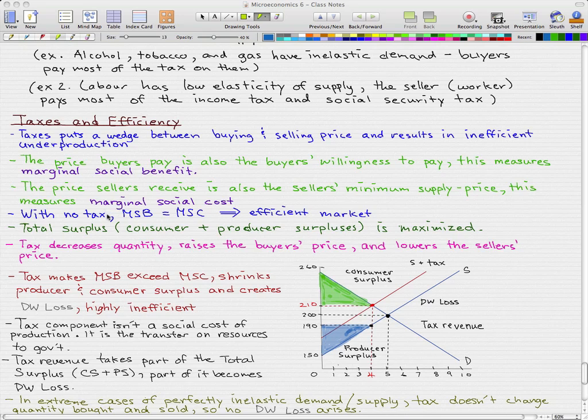We know that with no tax, the marginal social benefit equals the marginal social cost, and that results in an efficient market. The total surplus, which is the consumer plus producer surplus in this case, is maximized.